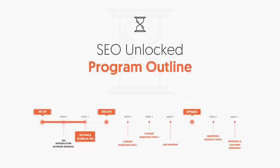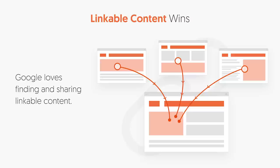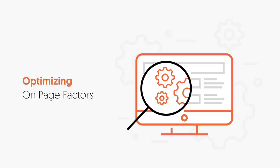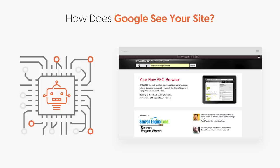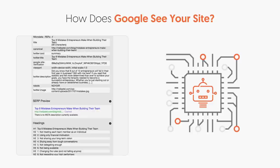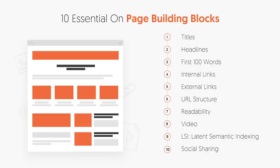Everyone knows that linkable content wins. The more people that link to you, the easier it is for Google to find your site and the higher you're going to end up ranking. There are many types of links — links from other sites linking to you, as well as other pages within your site linking to other pages. When you're optimizing for Google, there are many factors to look out for. But first, let me show you how Google sees your website. Go to browse SEO and put in your URL — it'll show you all this code and text, which is roughly how Google views your website. They don't see a pretty design; they see what's on that screen.